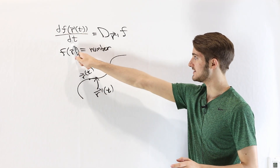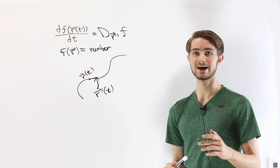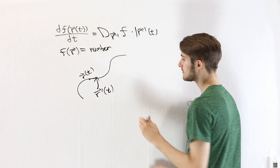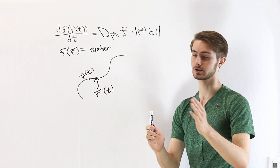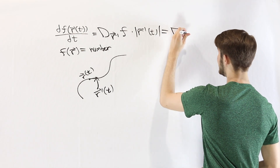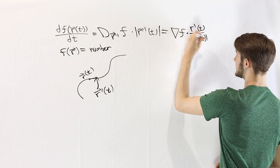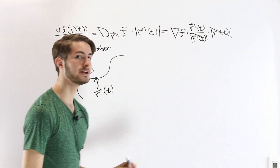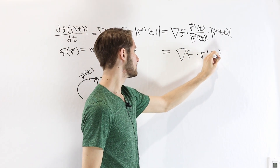If we want the derivative of f with respect to t, this directional derivative is only half the story, because it tells us how f changes when we move in the direction of r', but we also have to ask how far we are moving — described by the magnitude of r'(t). We can expand the directional derivative: it equals the gradient vector of f dotted with the unit vector in the direction of r', which is r'(t) divided by its magnitude, then multiplied by the magnitude of r'(t). The magnitude in the numerator and denominator cancel out, giving us the gradient of f dotted with r'(t).